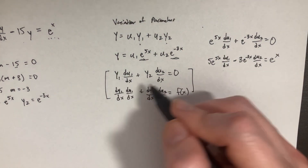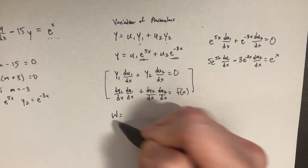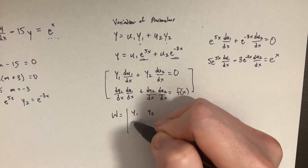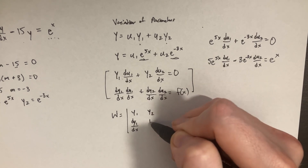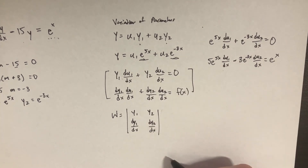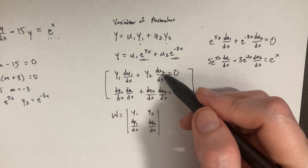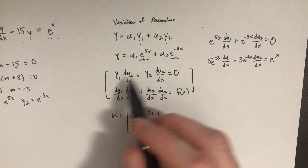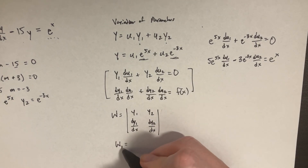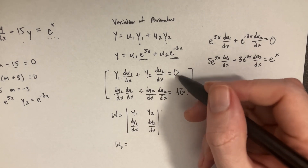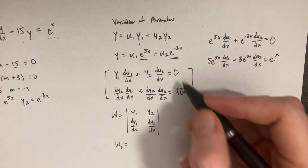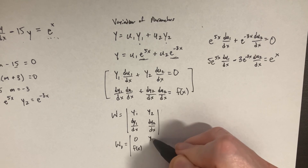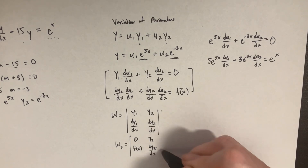We plug this into the Wronskian determinant. We take the coefficients y1, y2 and their derivatives. To solve for du1, we plug 0 and f(x) into the x-column locations alongside y2 and dy2/dx.